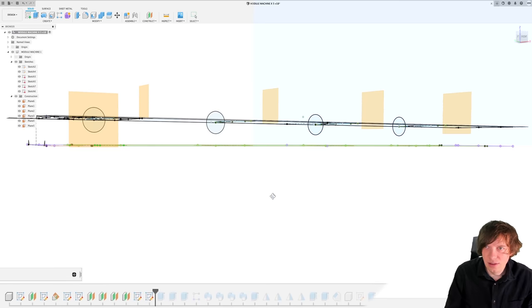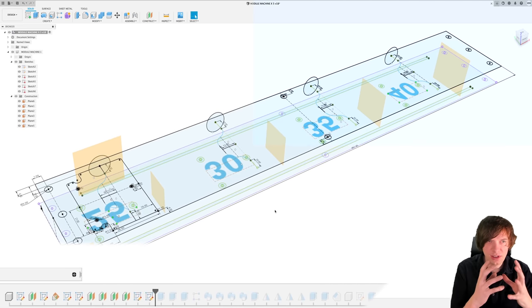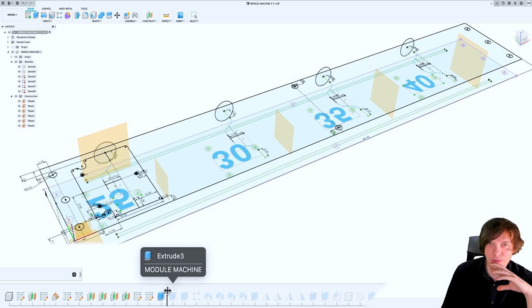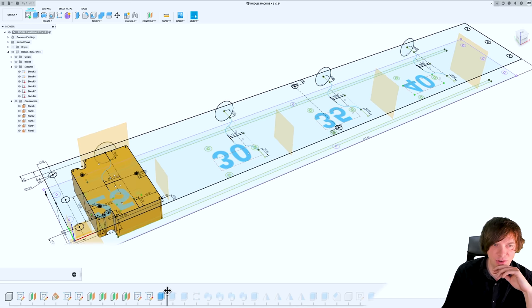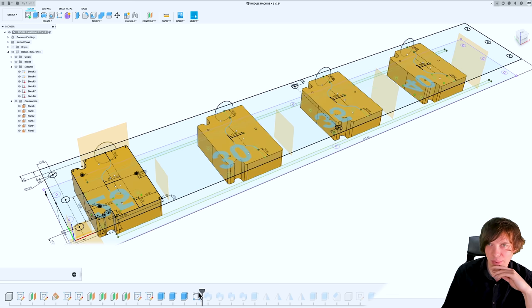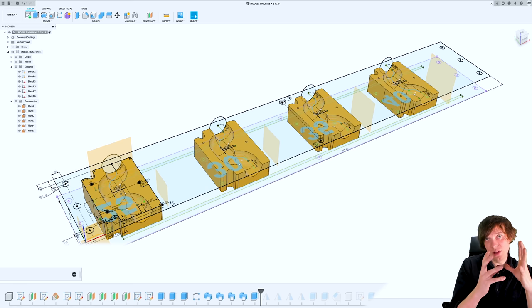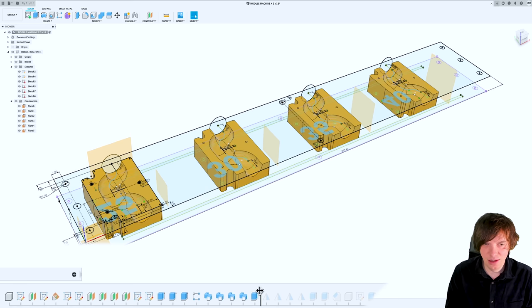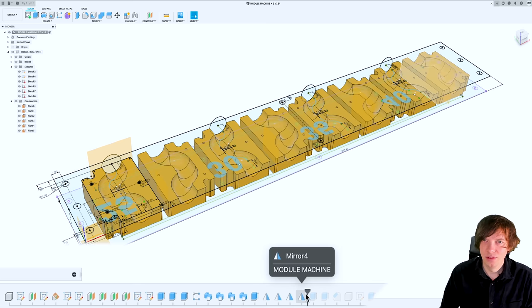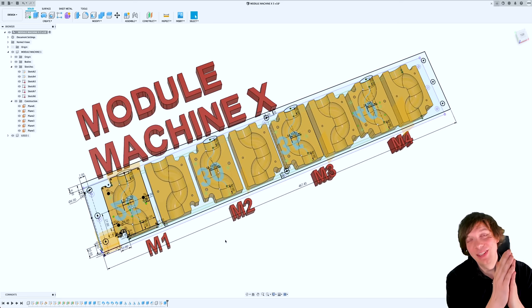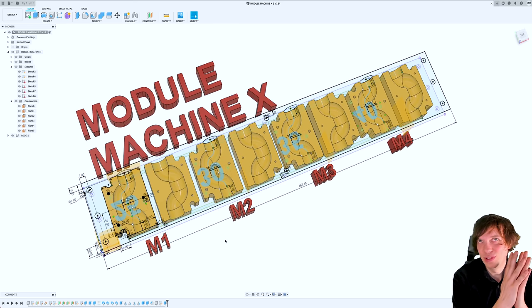So this is kind of the skeleton of the whole design. And as you can see here, there's no bodies. It's just construction things. Sketch lines and construction planes. First now I do an extrusion feature. Then I do some more and then I parallel pattern that into four parts. Then I do the sweeps, which is the marble paths themselves. And when all these bodies are done, I mirror them so they have the mirrored partners. That's the Module Machine X.